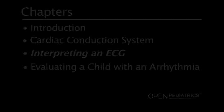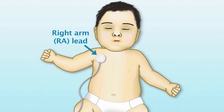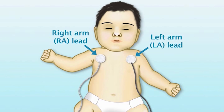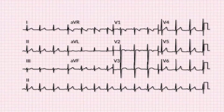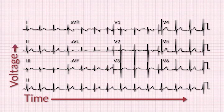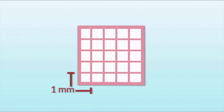Interpreting an ECG. Cardiac conduction is represented by the electrocardiogram, or ECG. For the three-lead setup, the right arm (RA) lead is placed directly below the clavicle near the right shoulder. The left arm (LA) lead is placed directly below the clavicle near the left shoulder. And the left leg (LL) lead is placed on the left lower abdomen. The ECG is recorded on ruled paper. Time is measured on the horizontal axis and voltage is measured on the vertical axis. The duration of any wave is determined by measuring along the horizontal axis. The smallest divisions are 1 millimeter long and 1 millimeter high. Each small square represents 0.04 seconds. There are five small squares between the dark lines, so the time between dark lines is 0.2 seconds.